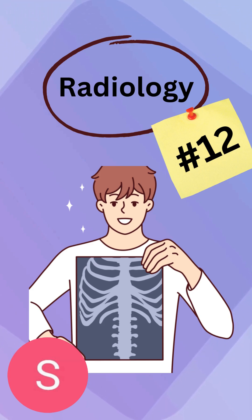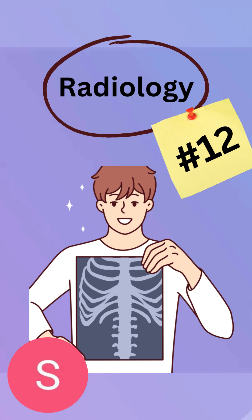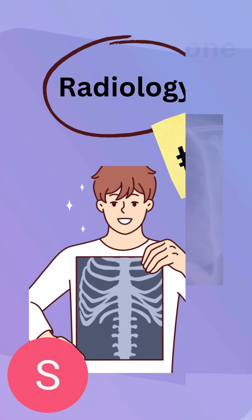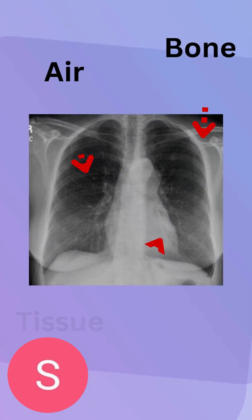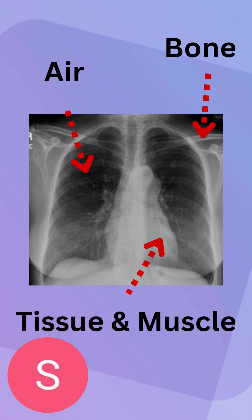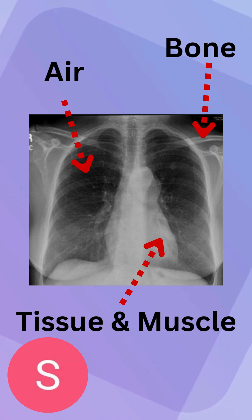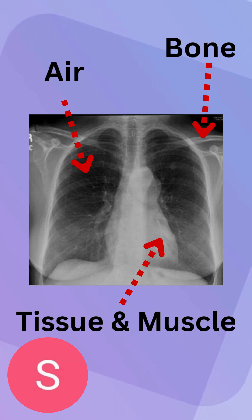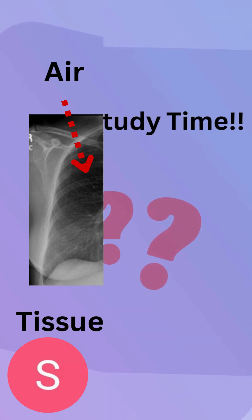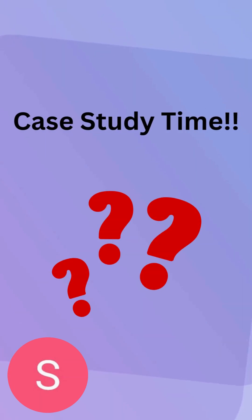We're going to follow a pretty similar baseline to what we've been doing in these past videos, mostly focusing on case studies. To review: the gradient colors between air, bone, tissue, and muscle, and always remember our orientation, which is going to be marked by R, N, and L, representing the patient's anatomical direction.